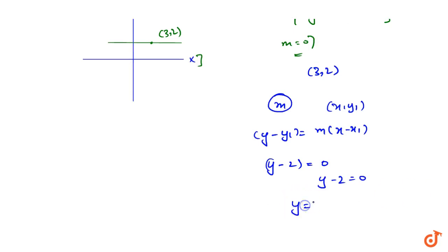And we can write it as y equal to 2. So it is the equation of the line that is parallel to x-axis and it is passing through the point (3,2).